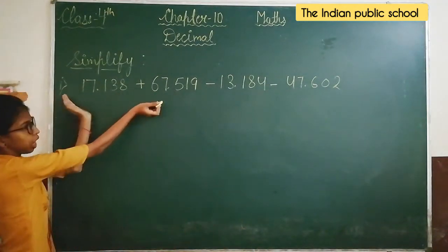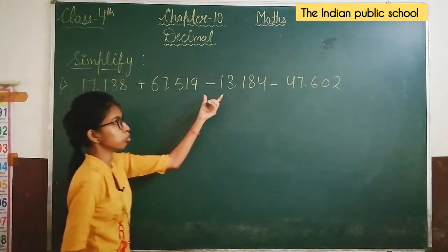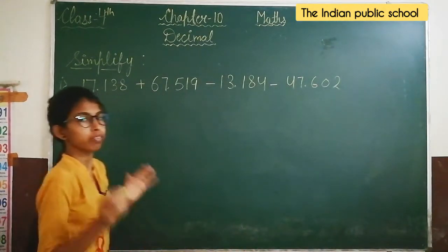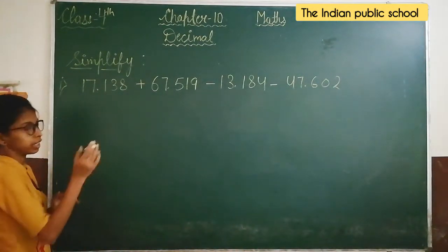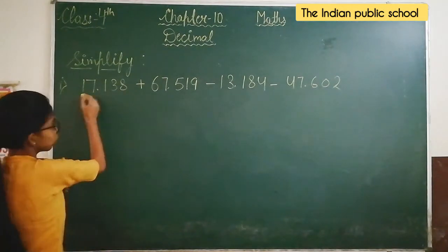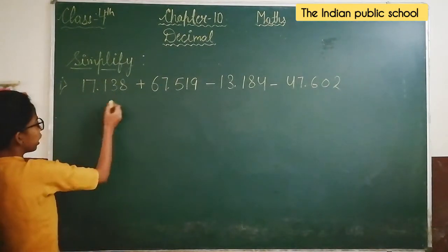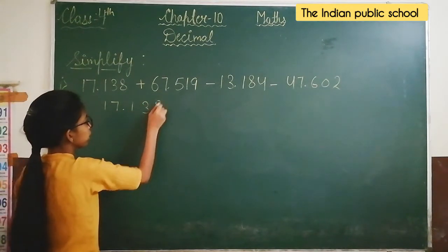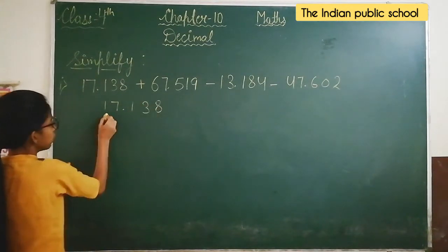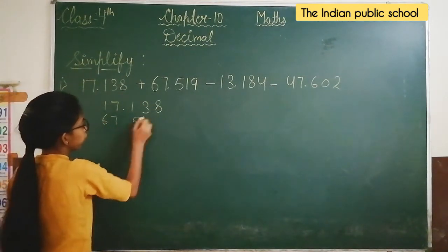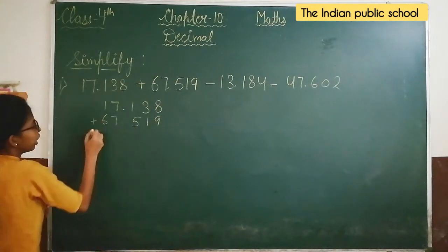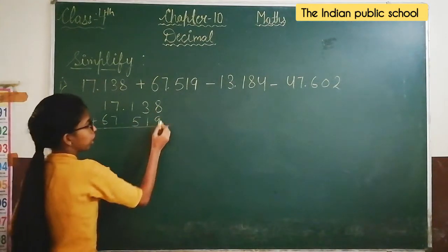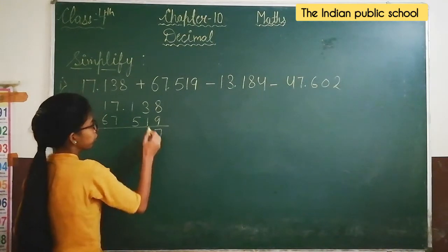The first two numbers are in addition and the last two are in addition among themselves. So these two numbers have the addition symbol. First we will add 17.138 and 67.5, and we will add them together to get 84.638.